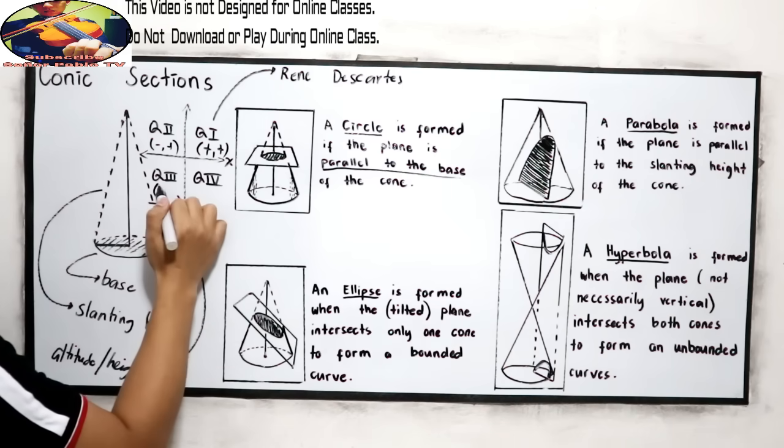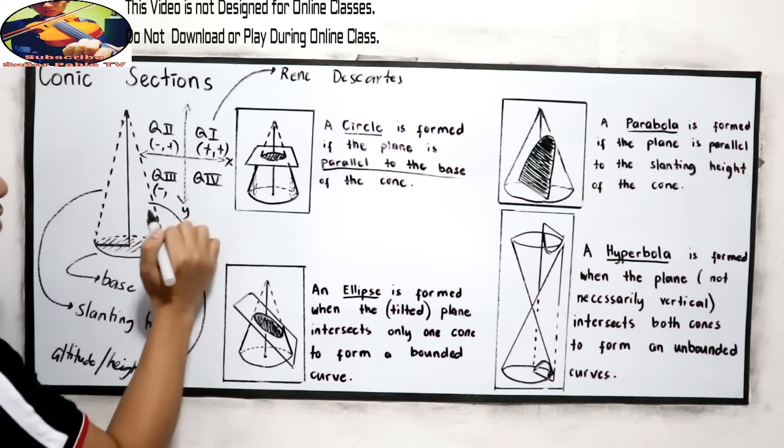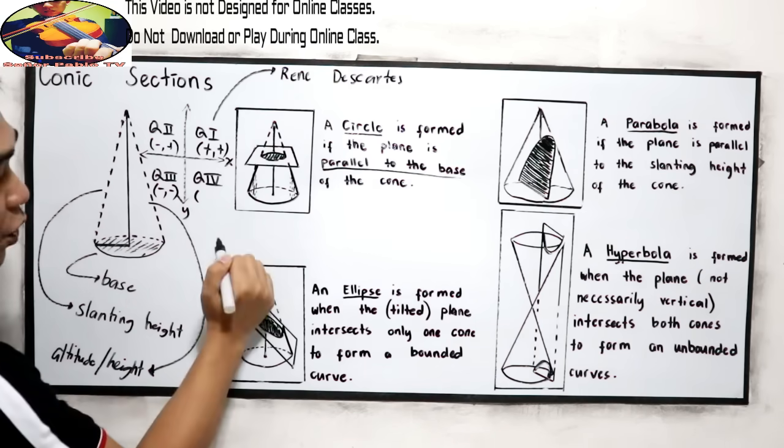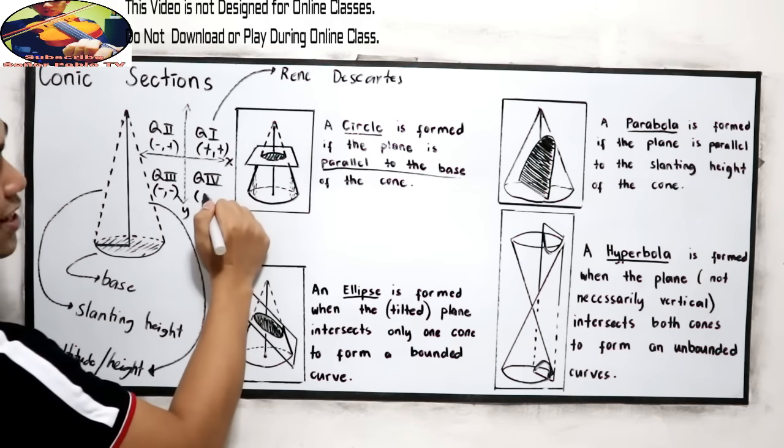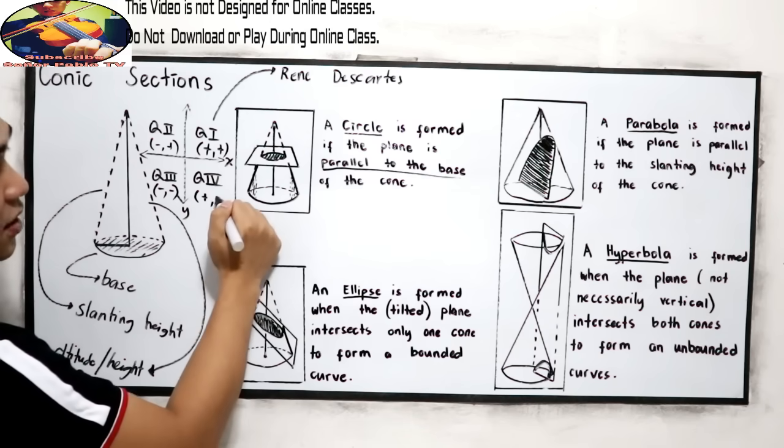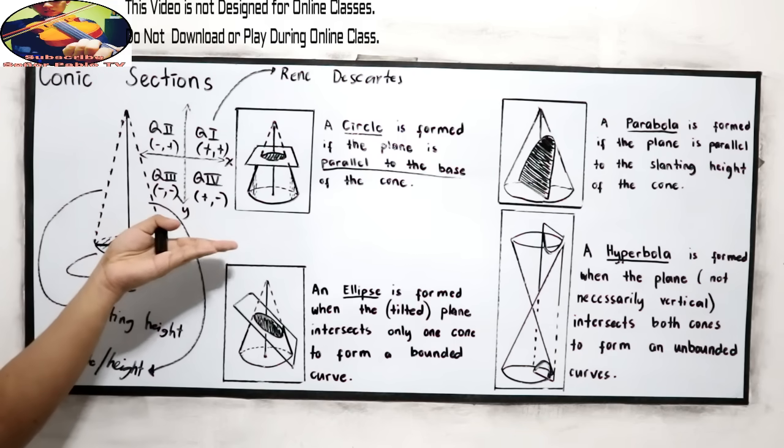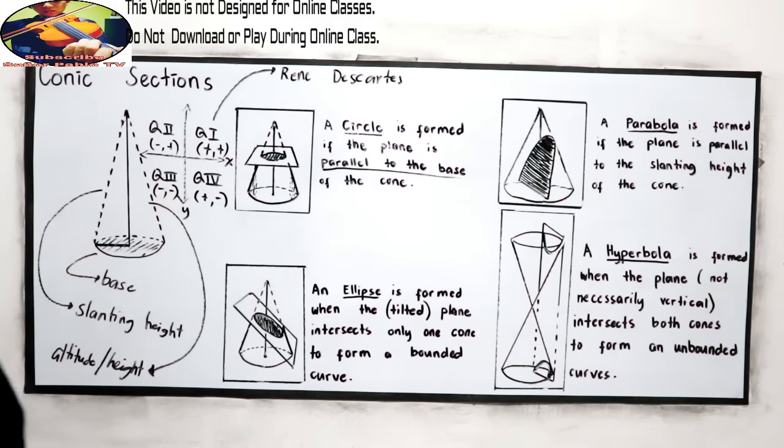Quadrant 3, the X-coordinate and Y-coordinate are negative. And in quadrant 4, the X-axis is positive and the Y-axis is negative. So, that's our rectangular coordinate system.